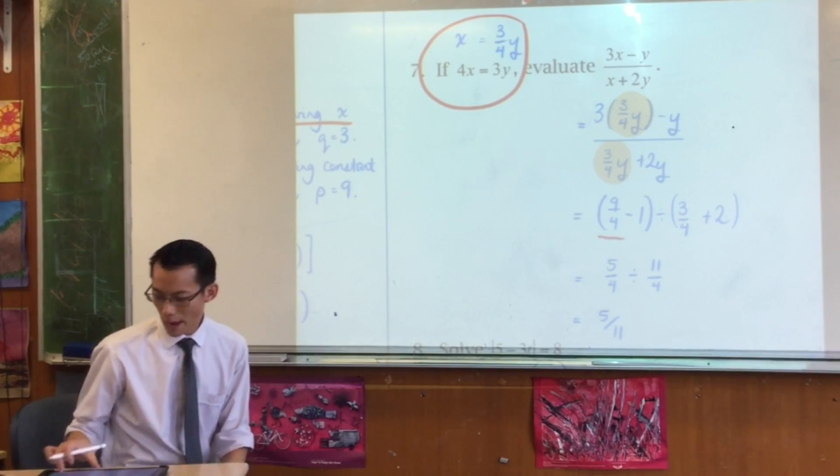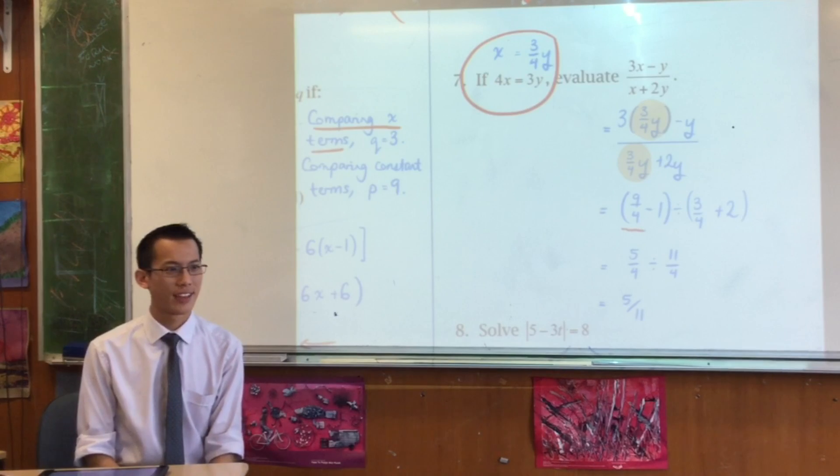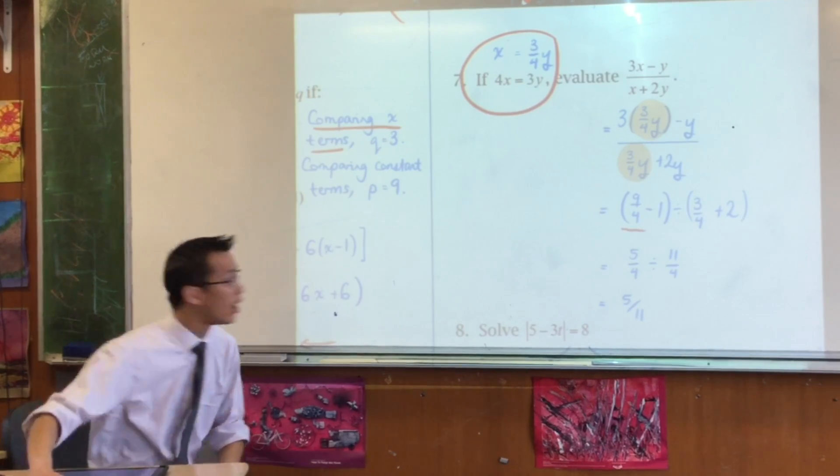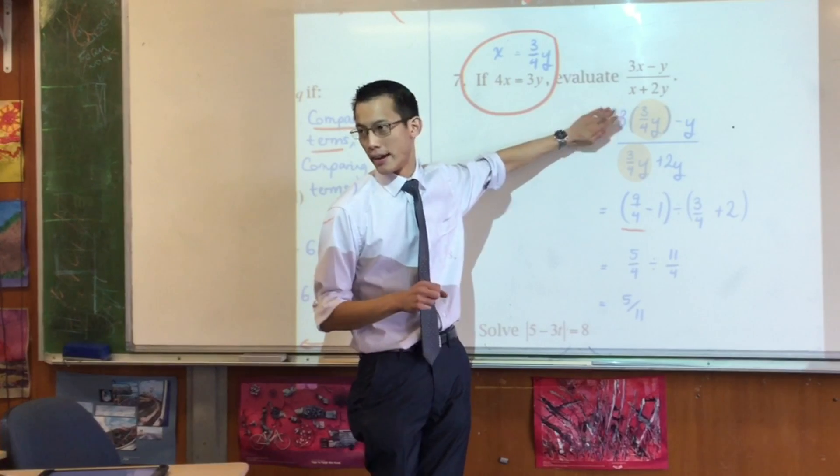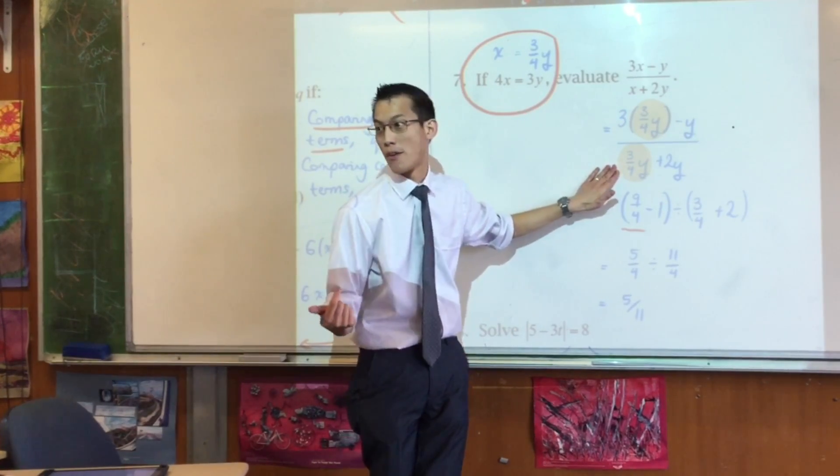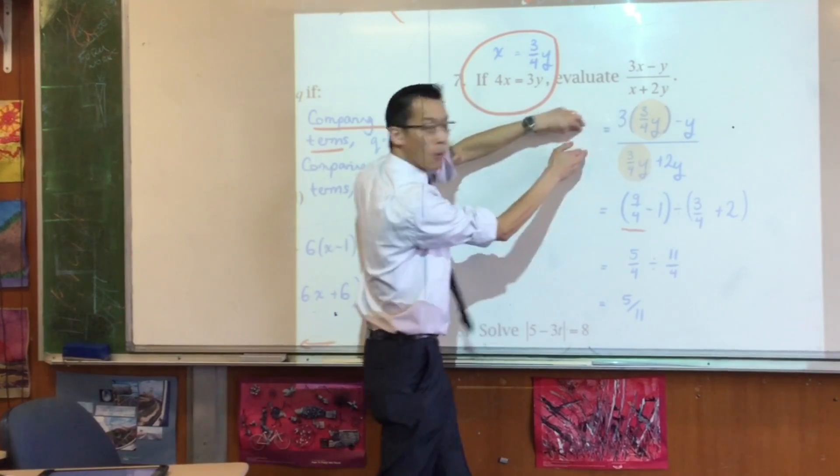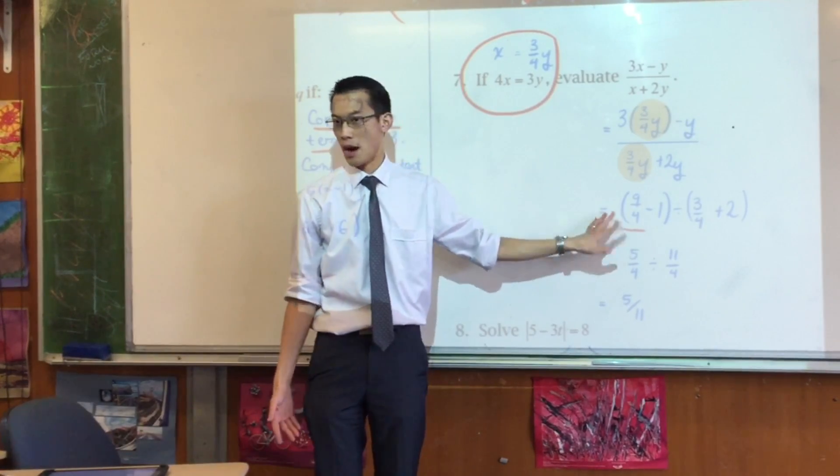5 over 1. Where did the Y go? Yes, where did the Y go? Can someone tell me? I cancelled it because, can you see on the numerator, I have a common factor of Y up here, just up here. And then on the denominator, I also have a common factor of Y. So, I pulled that Y out, and then I just cancelled it. It's gone. And that's why the Y disappeared.